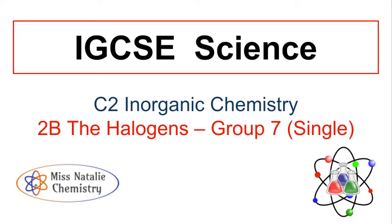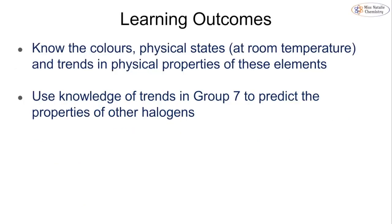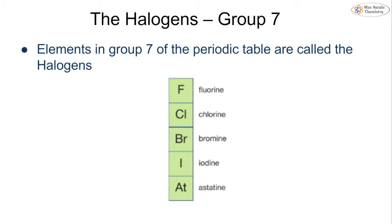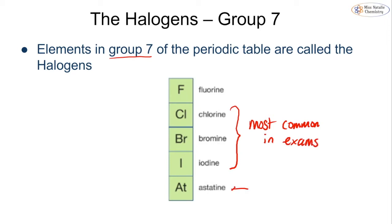In this video we're going to be looking at topic 2b, the halogens, which are group 7 of the periodic table. This is for the NXL IGCSE chemistry course and we're going to be focusing on the single science outcomes. For single science, you're required to know the colors, the physical states, and the trends in the physical properties of these group 7 elements, and how we use that knowledge to predict the properties of other halogens. The halogens are fluorine, chlorine, bromine, iodine, and astatine. The three that come up most often in exams are chlorine, bromine, and iodine. Fluorine sometimes comes up, and if you're asked about astatine it will likely be a predicting question.